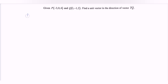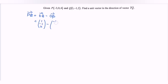To find the vector PQ, we use OQ minus OP. Substituting the values, we have (1, -1, 2) minus (-3, 0, 4), which gives us the vector PQ equal to (4, -1, -2).